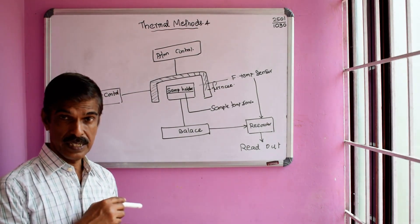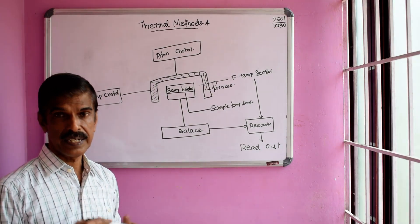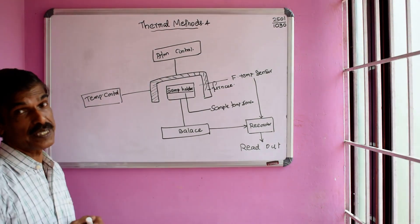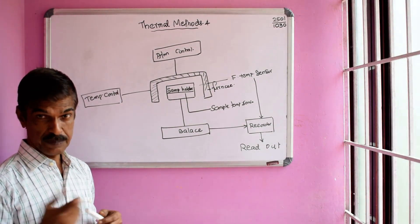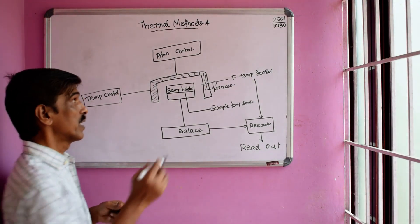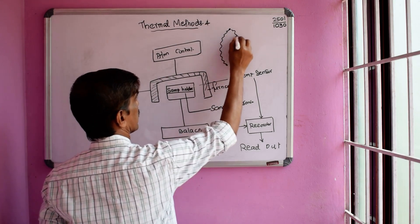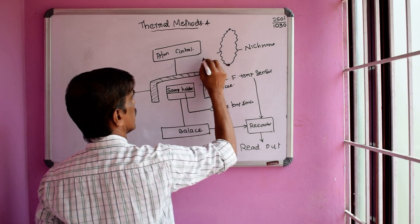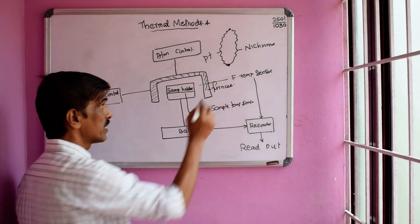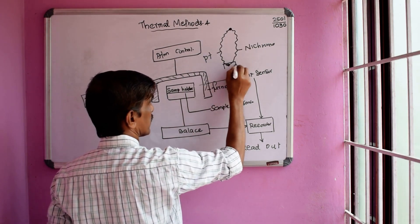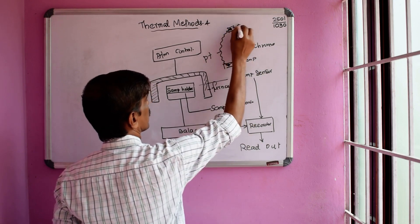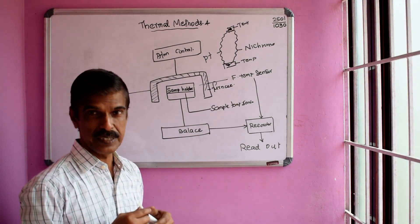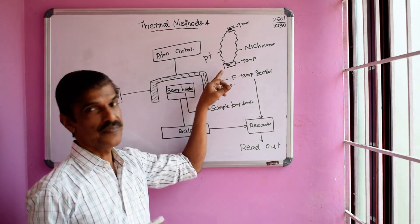The furnace can be heated from room temperature up to about 1000 to 1500 degrees. Temperature is measured using a thermocouple. The principle of the thermocouple is that two wires of different materials — such as nichrome wire and platinum wire — are joined at two junctions.